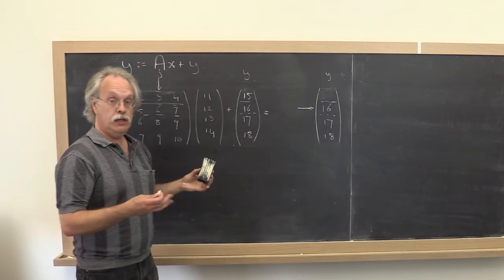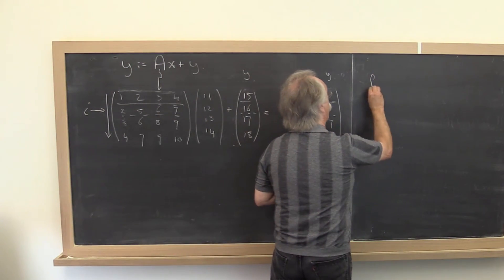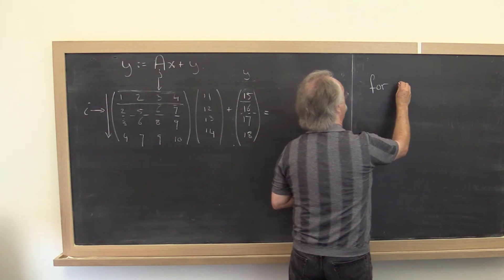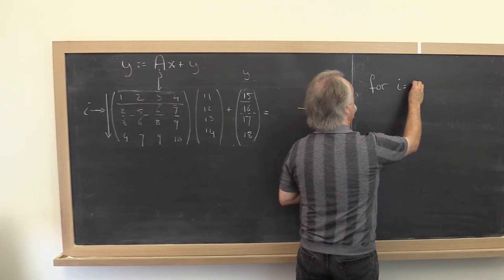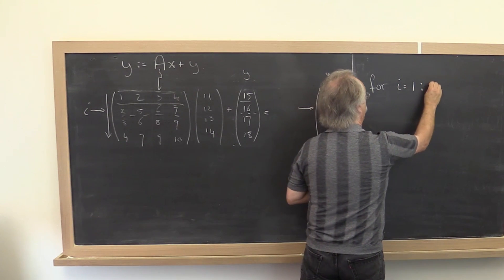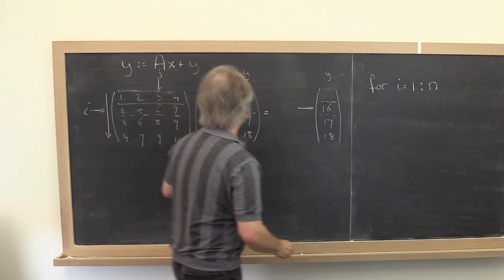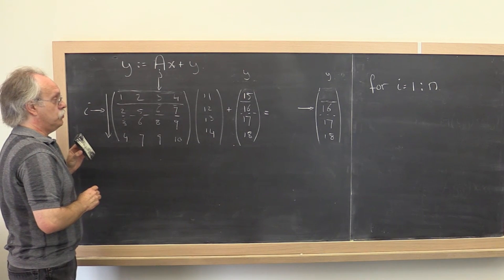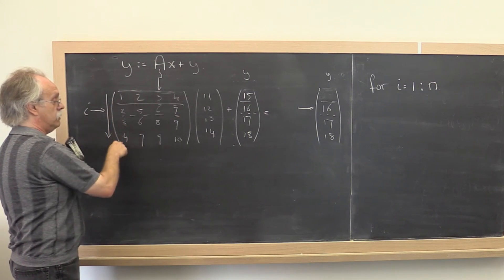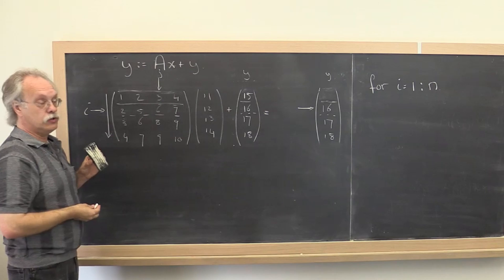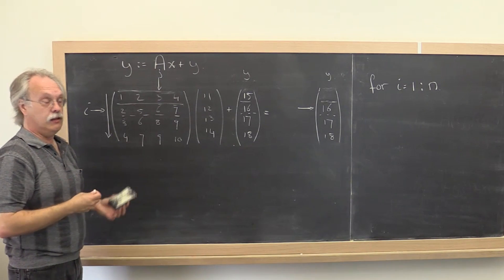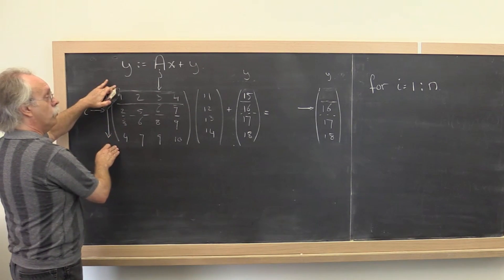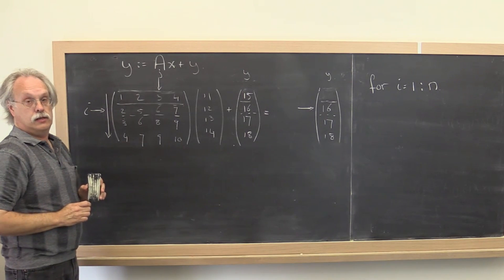So the way you would translate that is to say, okay, for i is equal to 1 through n. And notice that we're going to be dealing with symmetric matrices shortly, and therefore the number of columns is the same as the number of rows. And therefore I don't have to think about m versus n in terms of the row versus column size.